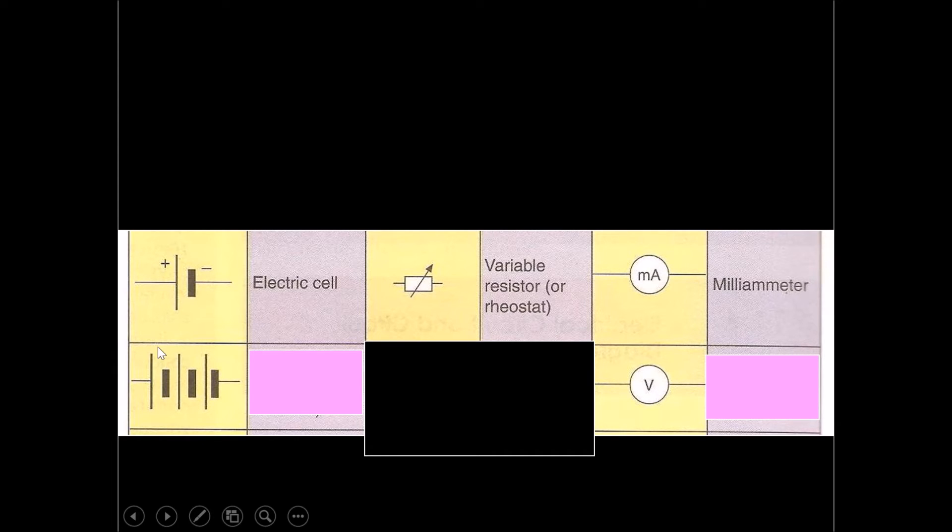Next, you will see what seems to be a repeat of the electric cell, perhaps three of them in a row. This would be called a battery, which is a few electric cells in series. And this one over here with a circle and a V represents a voltmeter.